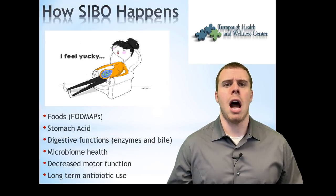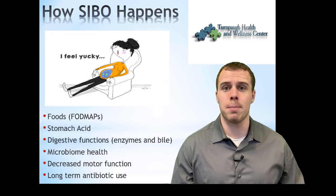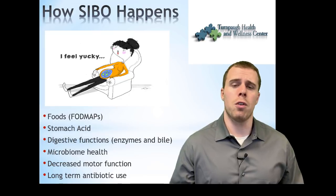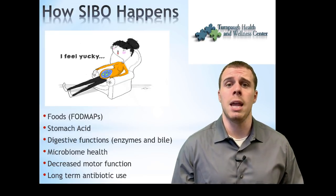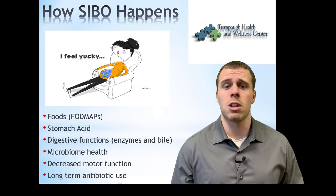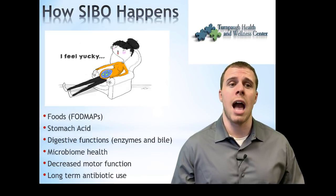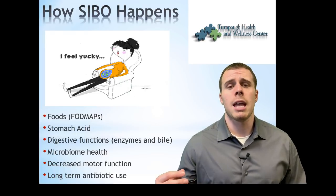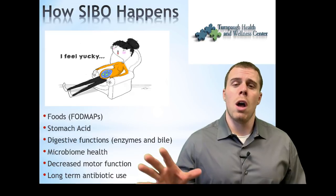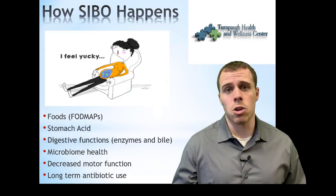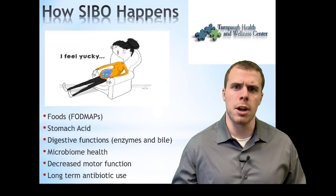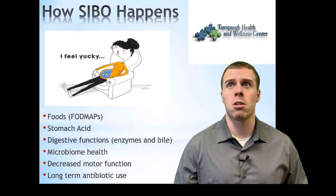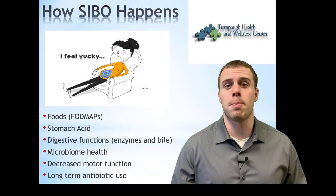So how does someone get SIBO? How do these issues or failures of mechanism occur? First are the foods we eat. Very common would be your FODMAPs — fructooligosaccharides, disaccharides, monosaccharides, and polyols. A lot of these foods can be considered prebiotics. Prebiotics can feed the bad bacteria and create an even more dysbiotic environment.